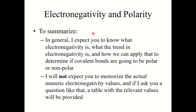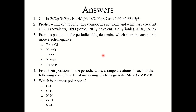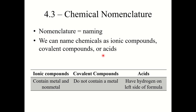To summarize: I do expect you to know what electronegativity is, what the trend in electronegativity is, and how to apply that to determine if covalent bonds are polar or nonpolar. However, I am not going to expect you to memorize the actual numeric electronegativity values — if I ask a question like that, a table with the relevant values will be provided. Here are a few practice problems to try — pause the video and give them a try, and the answers are on the next page. That concludes Section 4.2. I'll see you in the next video for Section 4.3, Chemical Nomenclature.